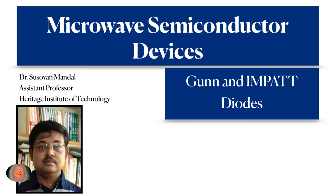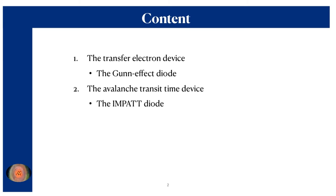On the other hand, the IMPATT diode, which stands for Impact Ionization Transit Time Diodes, can also deliver power to the external circuitry, but the working principle of the IMPATT diode is different from that of the GAN diode. It is based on the impact ionization process that takes place within the device, and by that process it can generate power and finally deliver it to the external circuitry. I will discuss both of these diodes in this lecture — first the GAN diode and next the IMPATT diode.